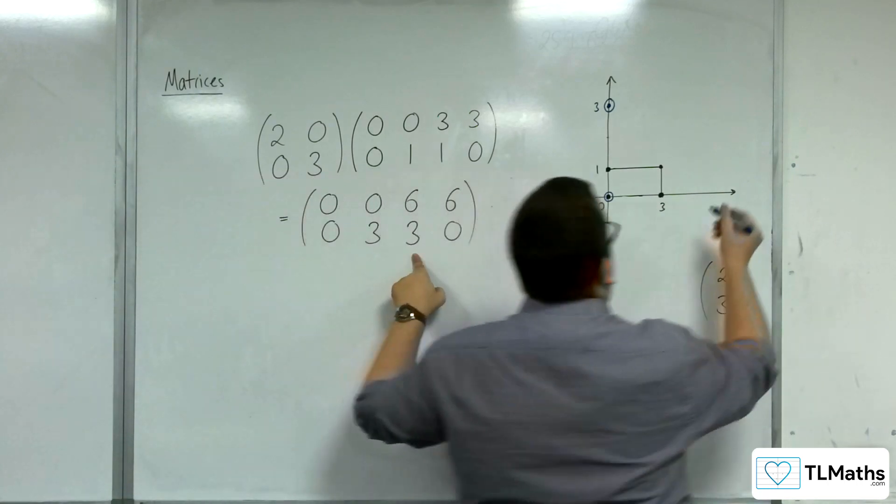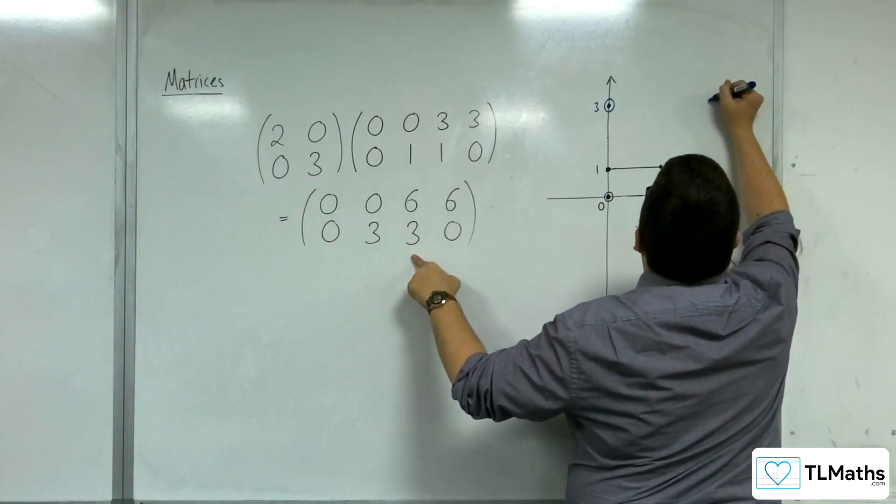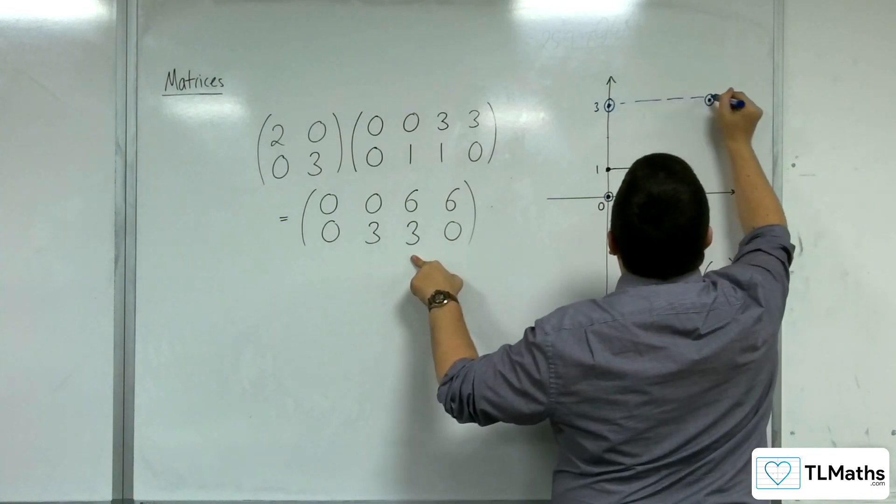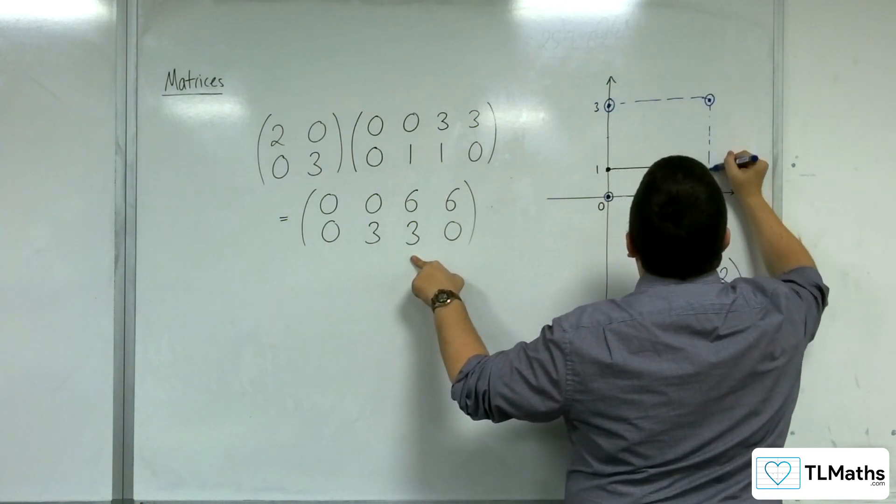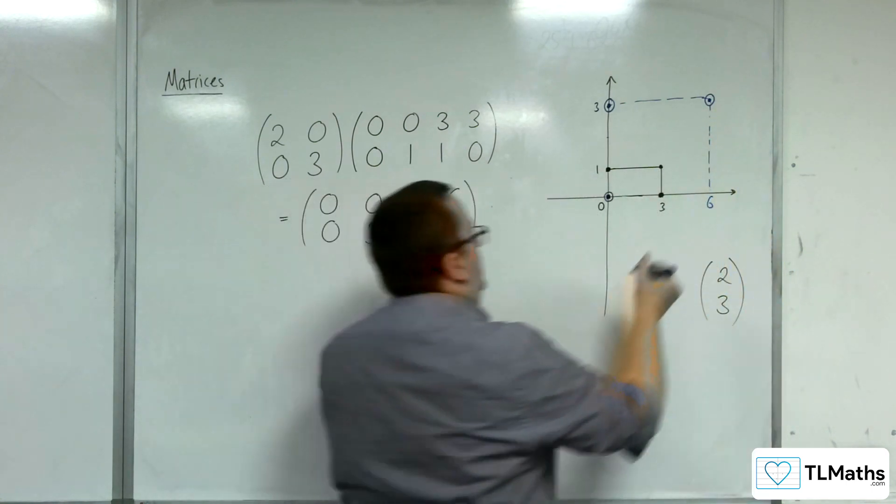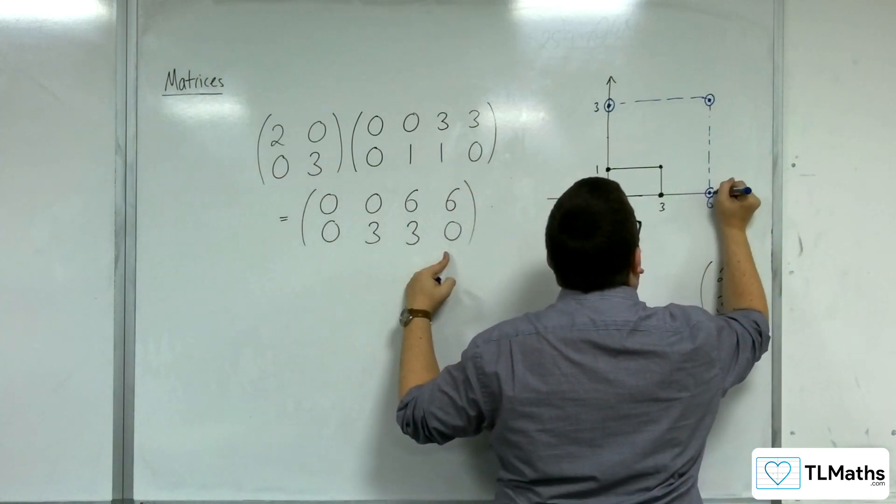6, 3. So somewhere over here, I reckon. 6, 3. And 6, 0. This point here.